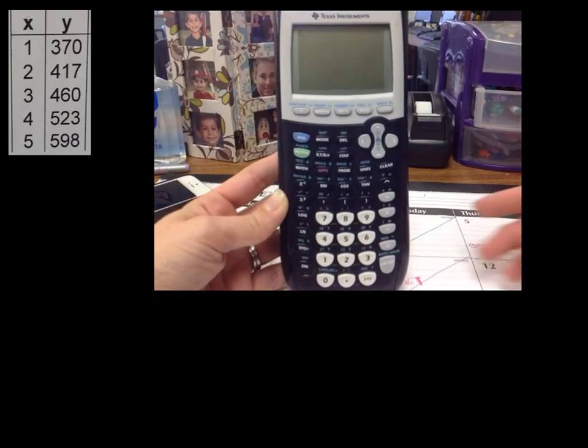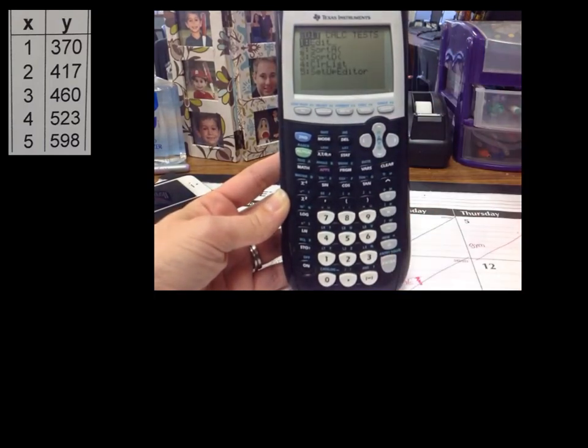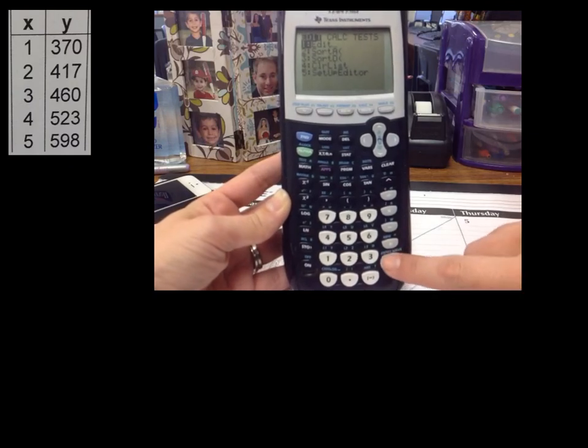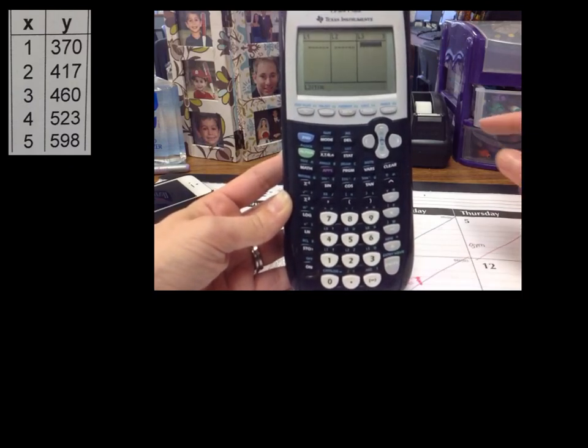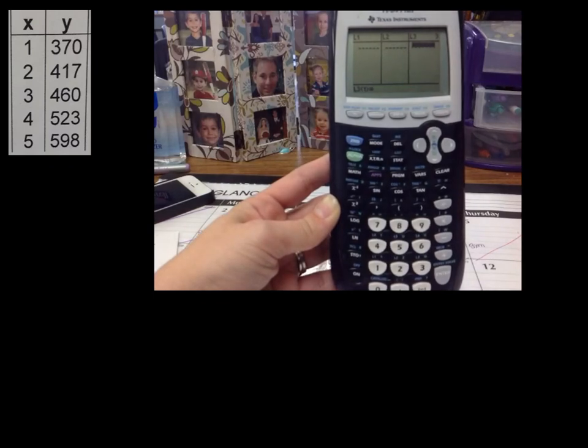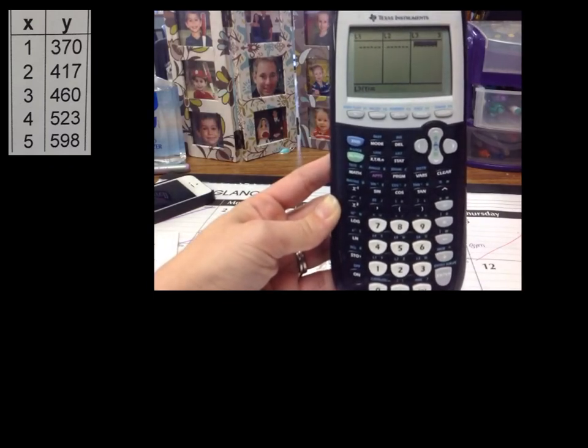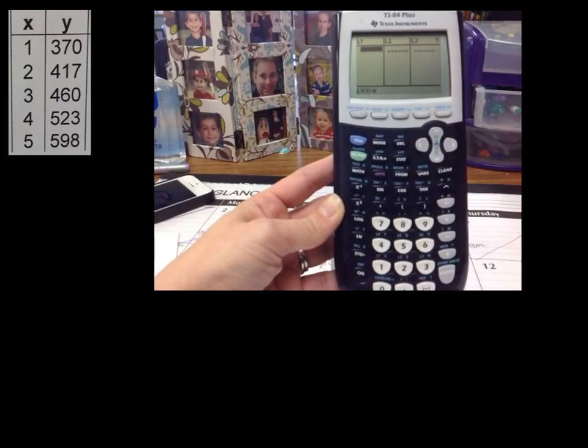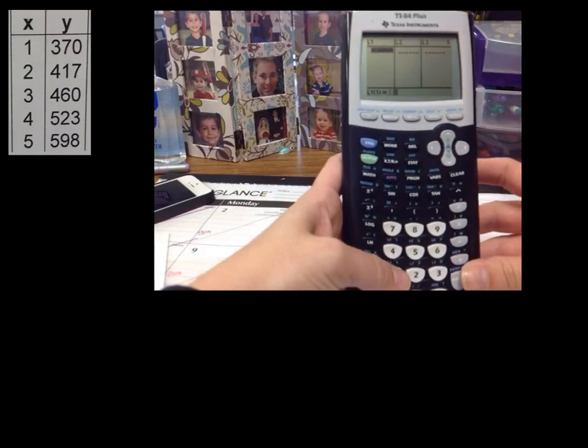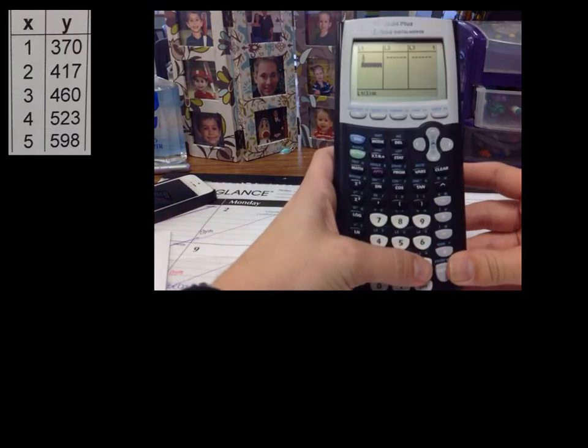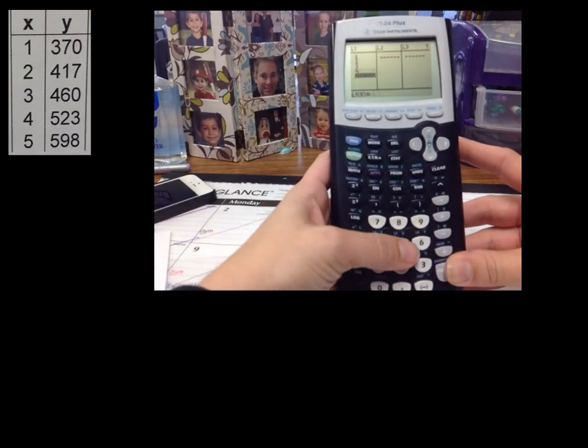All right, the first thing we're going to do is we're going to hit STAT right there. And then we're going to choose Edit here. And then in L1, list 1, we are going to put in the x values in this table here. So we're going to put in 1, 2, 3, 4, 5.